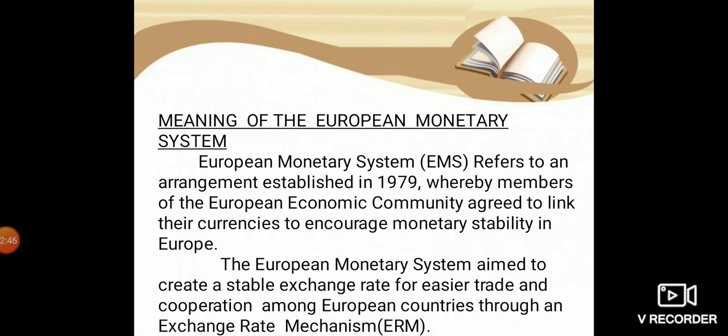The meaning of the European Monetary System: The European Monetary System refers to an arrangement established in 1979 whereby members of the European Economic Community agreed to link their currencies to encourage monetary stability in Europe. The EMS aimed to create stable exchange rates for easier trade and cooperation among European countries through an exchange rate mechanism.